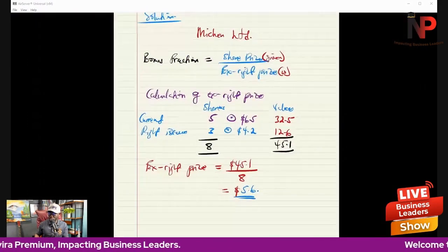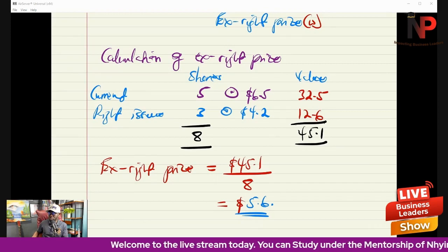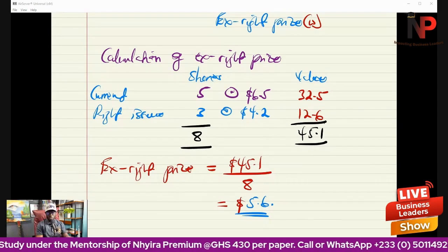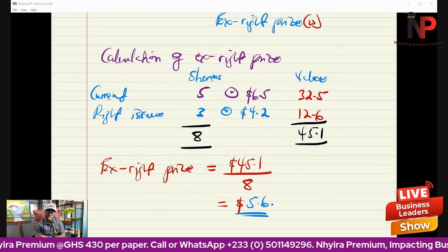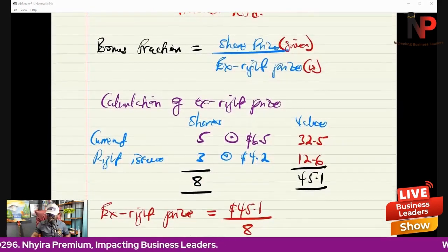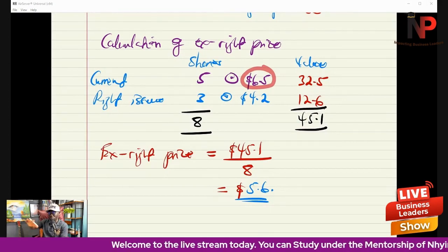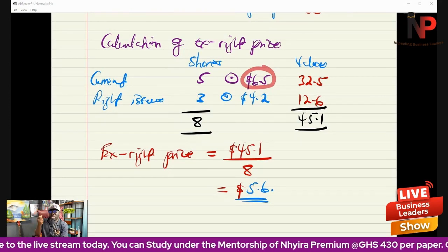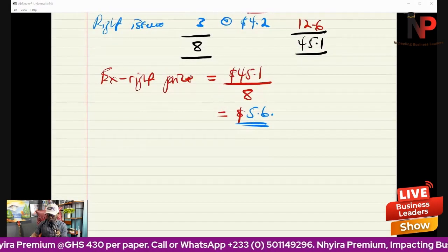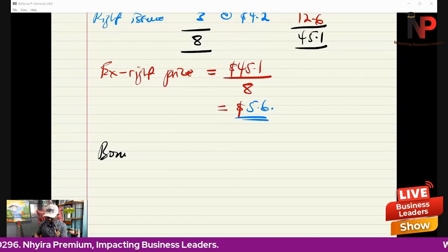The theoretical X-right price is called 'theoretical' because it is like the new market value after the issue, not the actual prevailing trading price. In financial management, shares will still trade at $6.50. But we calculate this theoretical value for use in financial reporting. Its deeper implication is not needed here in the financial reporting context. So now that we have the X-right price, we can calculate our bonus fraction.